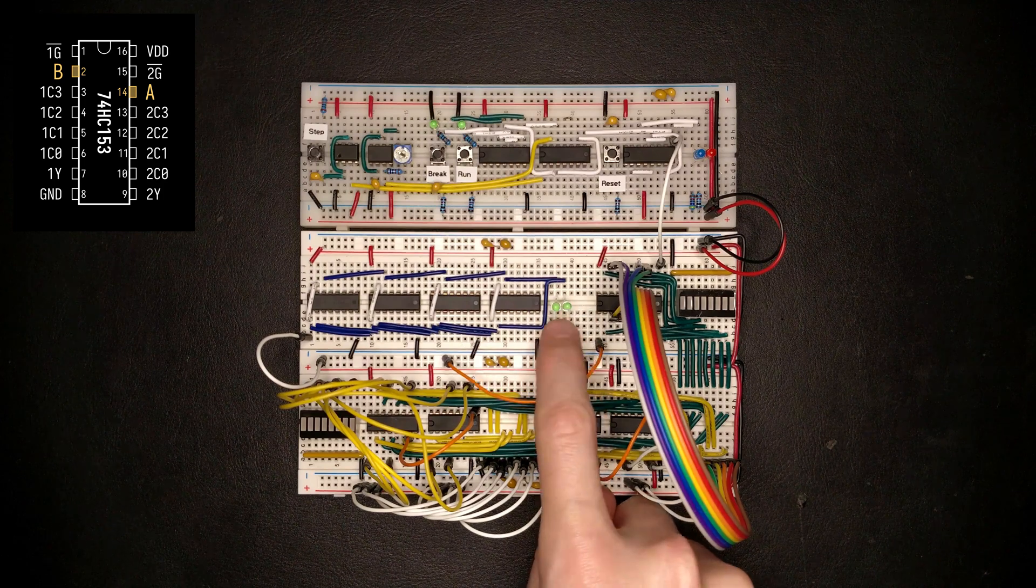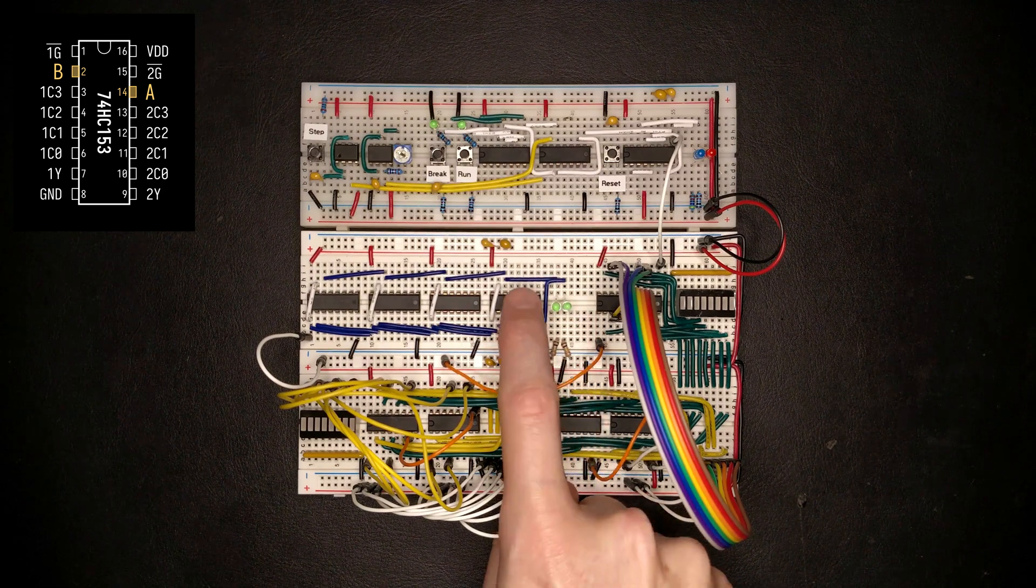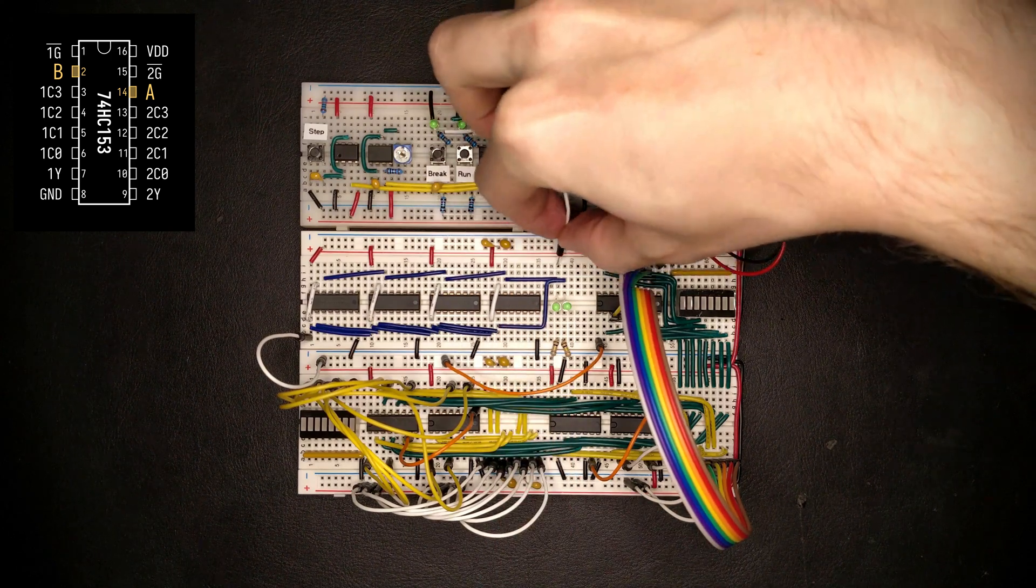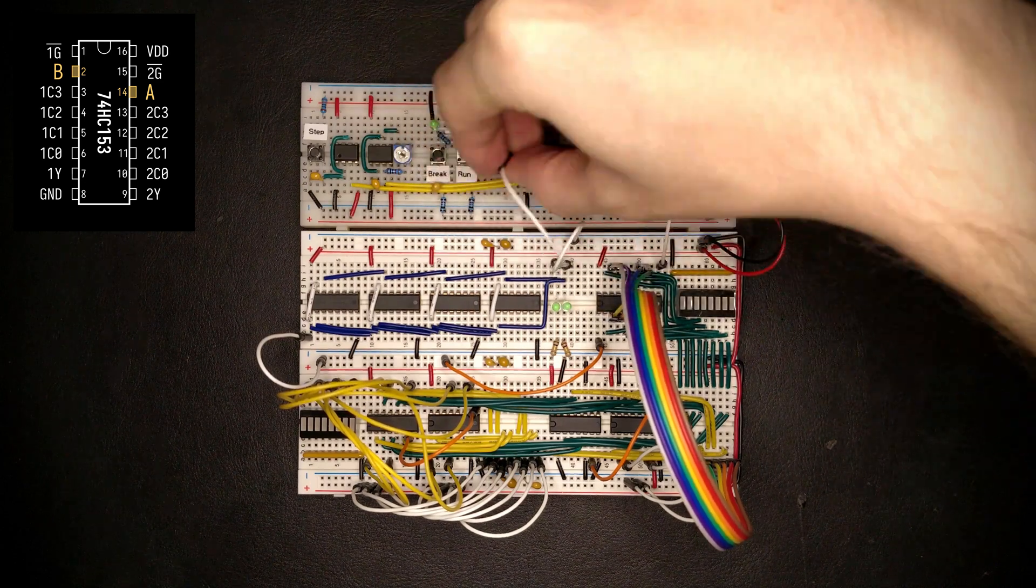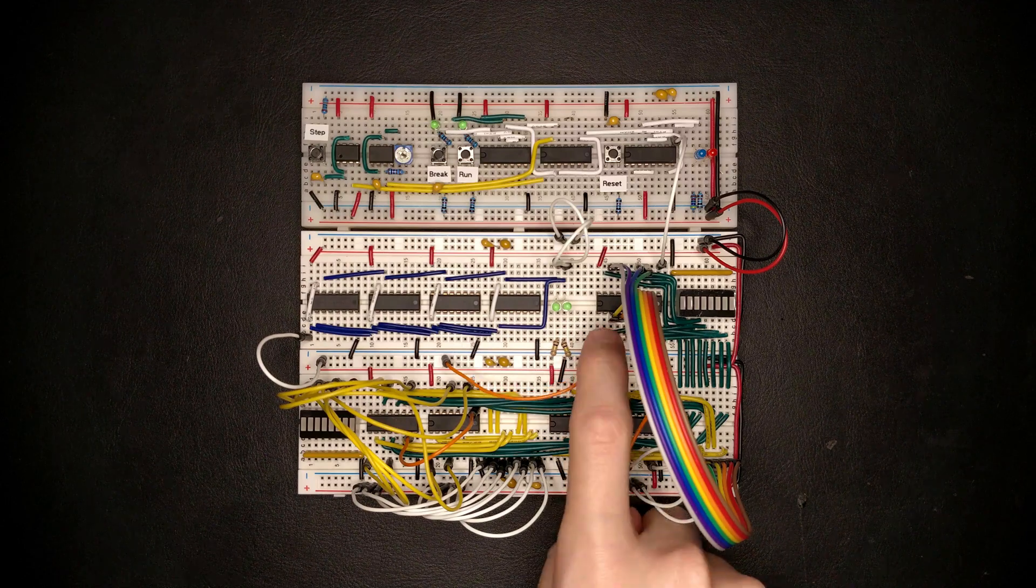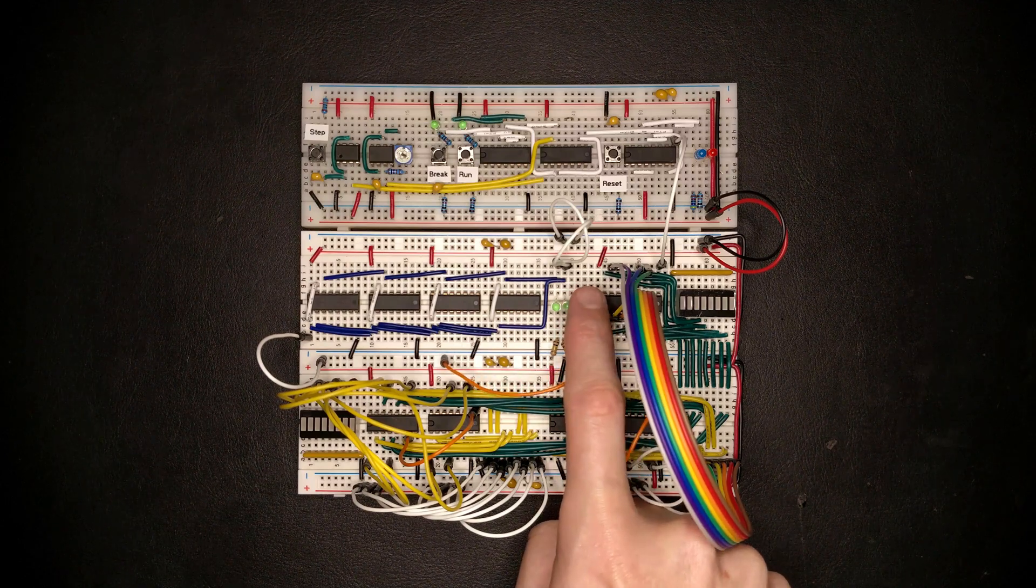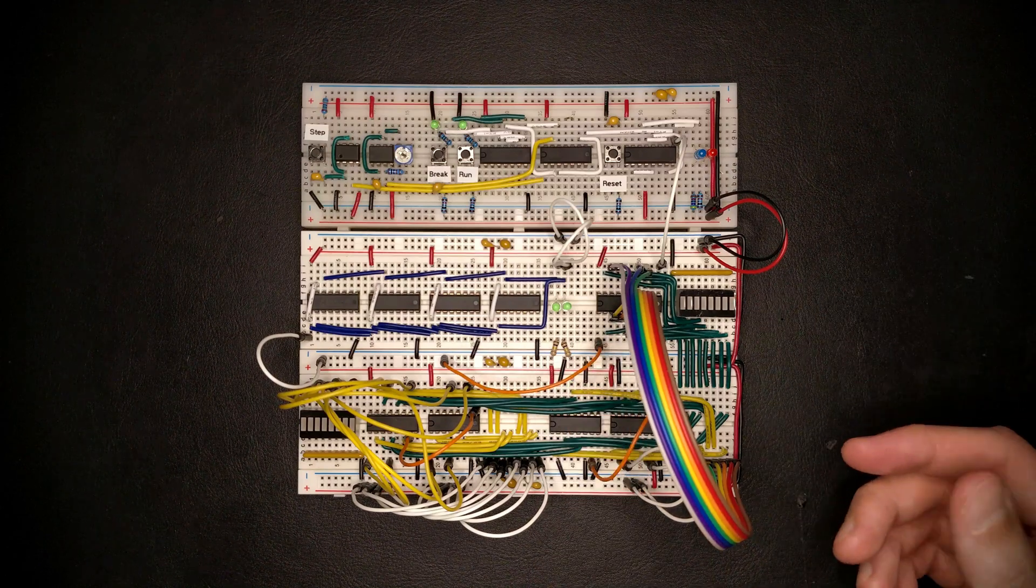Let me also connect the select inputs to zero at the moment, which will select the first of the inputs of the multiplexer. Also while we're at it, we might want to visualize the clock enable signal of the register as well to see when the program counter is actually enabled and wants to update.